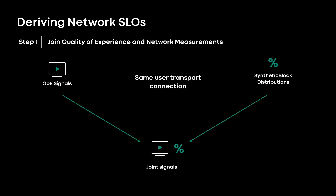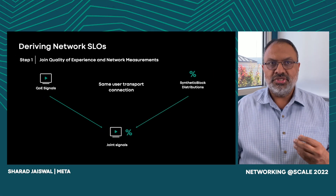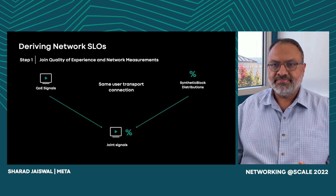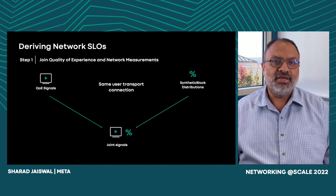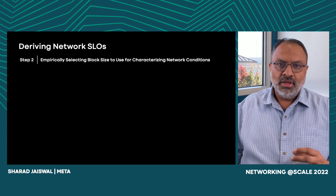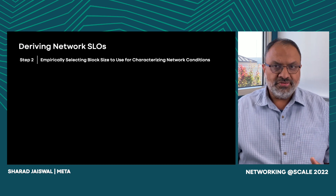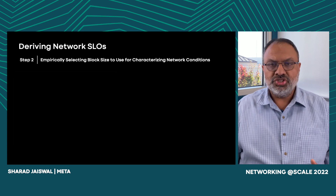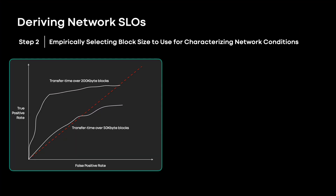A key step towards deriving network SLOs is to gather network quality of service samples — namely the transfer times of synthetic blocks — jointly with the quality of experience signals for the same user sessions. This ensures that we know the precise network conditions associated with any change in quality of experience. Hence, it's essential we collect them together.